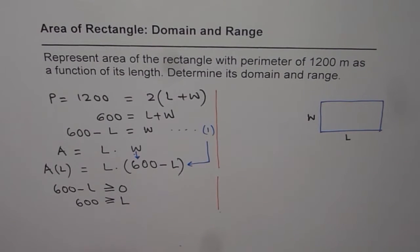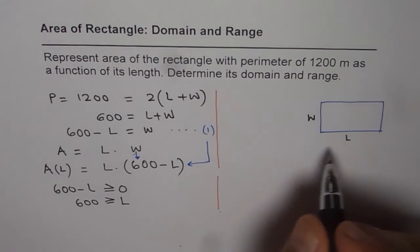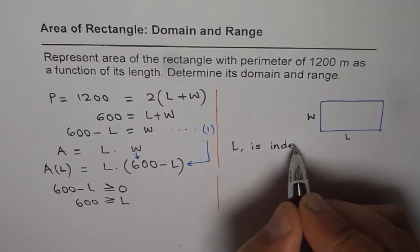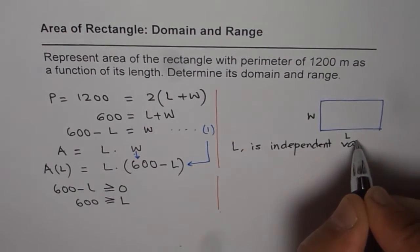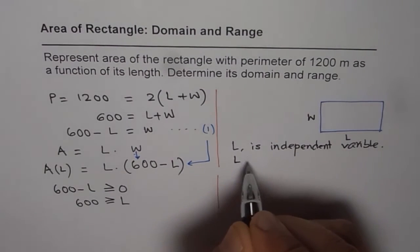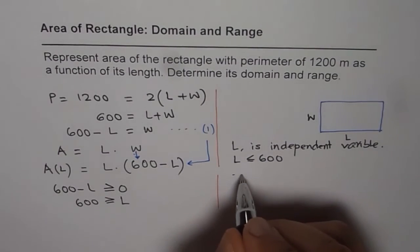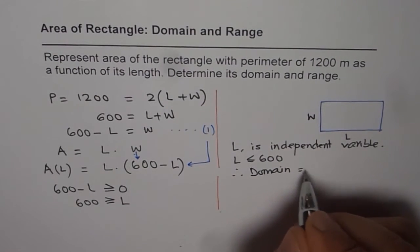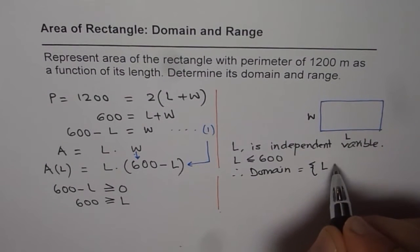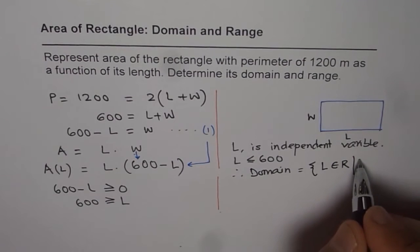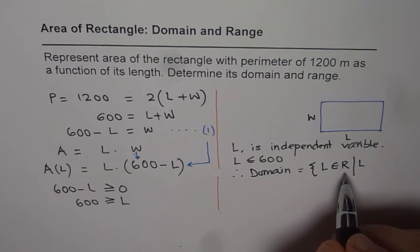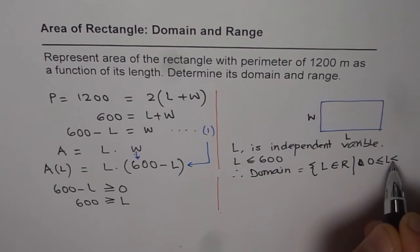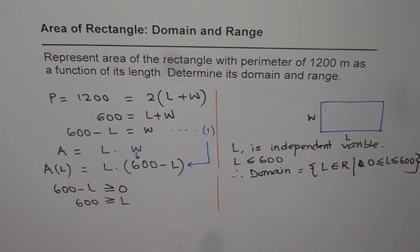So we can write down from here that length is less than 600 and therefore length is what? Length is the independent variable. And we also know that L is less than or equal to 600. So therefore we say domain is, in this case, we will say domain is equals to L could be any real number. So we say length, which belongs to set of real numbers. And L is, so because it cannot be 0, so it has to be greater than or equal to 0. So it is L is greater than or equal to 0, but less than or equal to 600. So that is the length.